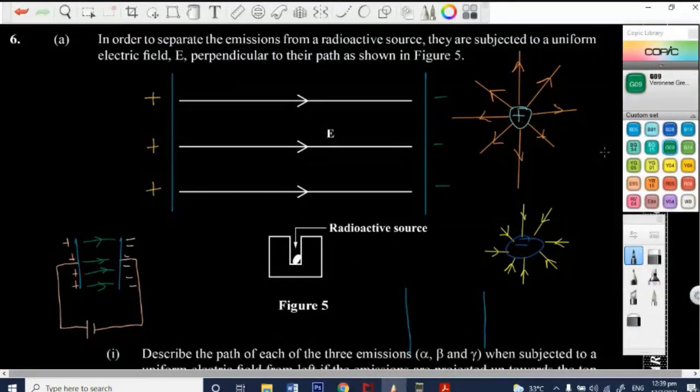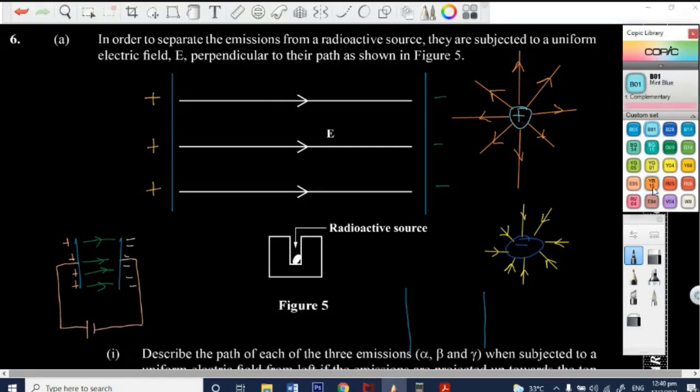Alpha. And alpha positive, they charge. So we're talking about alpha, beta, and gamma, right? Now, we know that alpha, what's the charge on an alpha particle? Positive. It is positive.